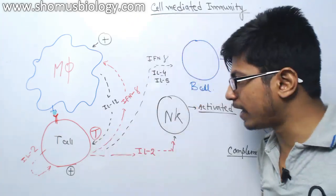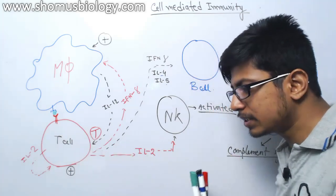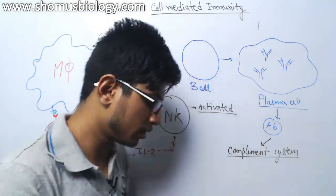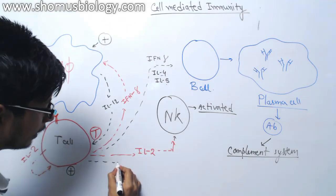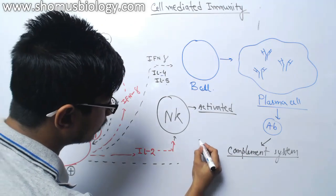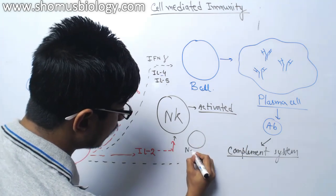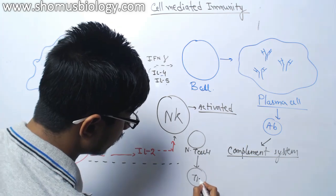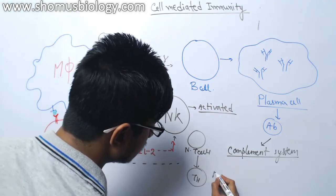So by that fashion, more and more naive T-cells will be converted into T-helper cells. So let me write it here. Again, another mode of response that converts naive T-cells into T-helper cells, which is active.